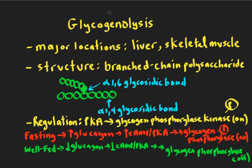To summarize, you should now be able to describe glycogenolysis, know the major locations of the liver and skeletal muscle, describe the branched structure with alpha-1,6 and alpha-1,4 glycosidic bonds, and understand how glycogen metabolism in the liver is regulated in the fasting and well-fed state — primarily through glucagon levels affecting PKA regulation of glycogen phosphorylase kinase. That concludes this lecture on glycogenolysis.